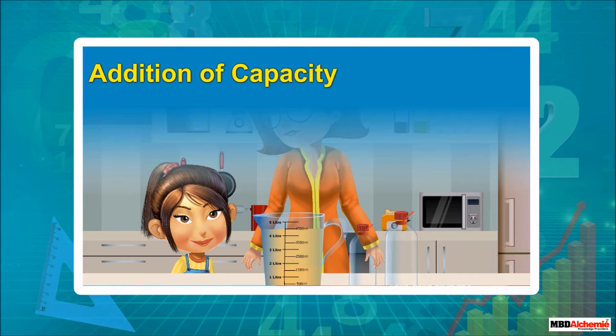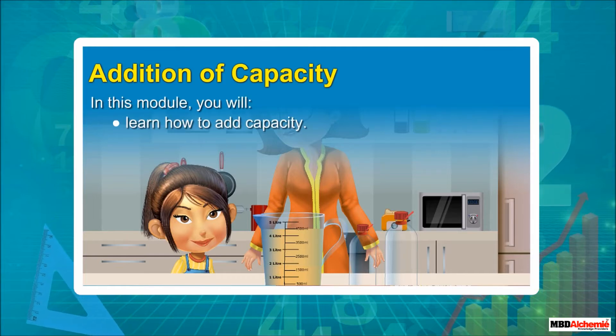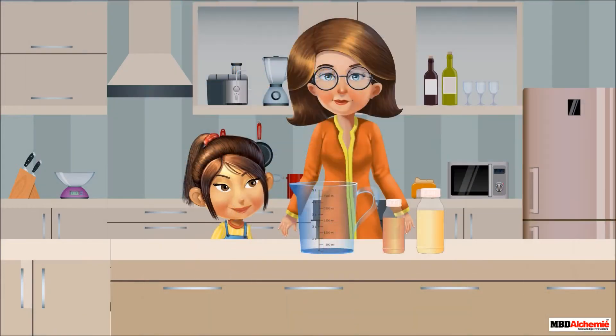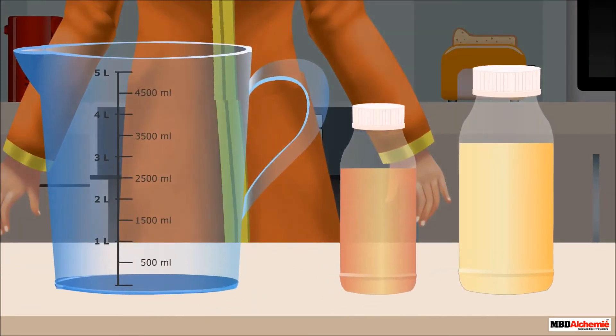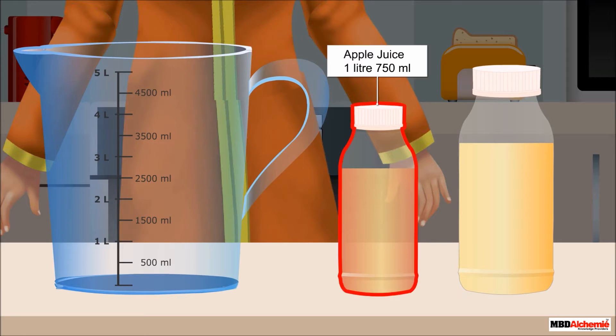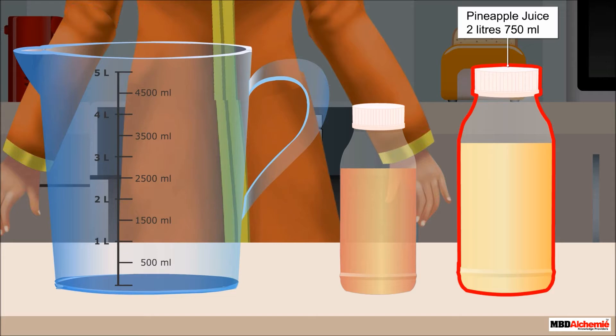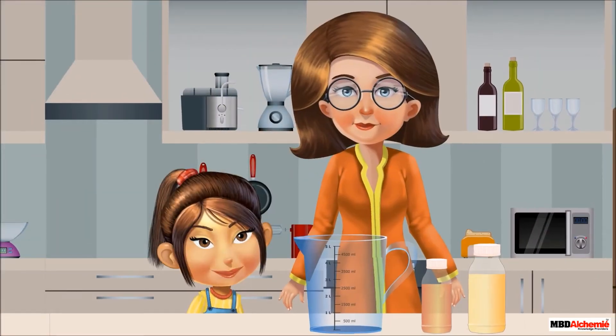Addition of capacity. In this module, you will learn how to add capacity. Alicia's mother invites some guests for dinner. She makes fruit punch using 1 liter 750 milliliters apple juice and 2 liters 750 milliliters pineapple juice.